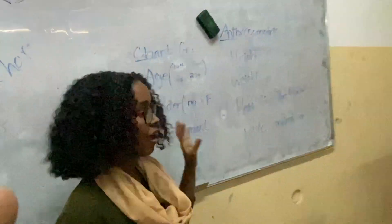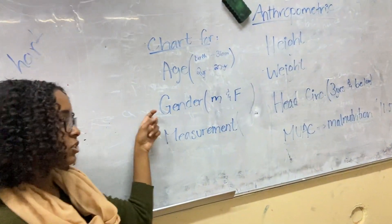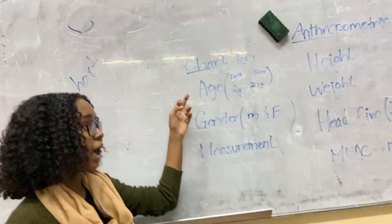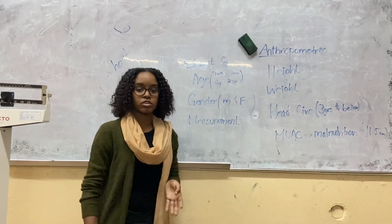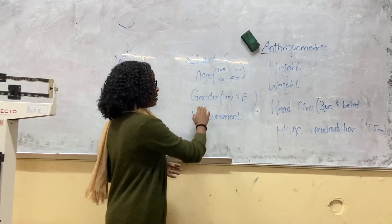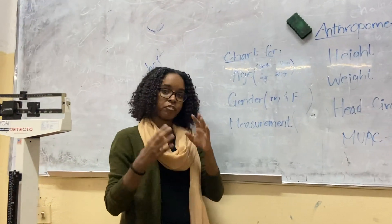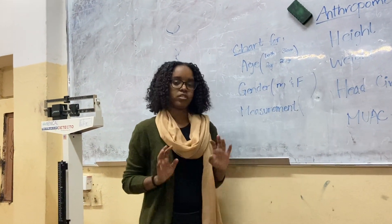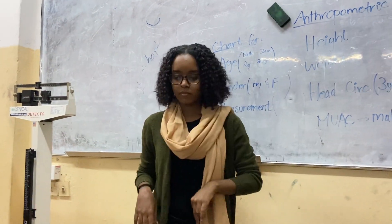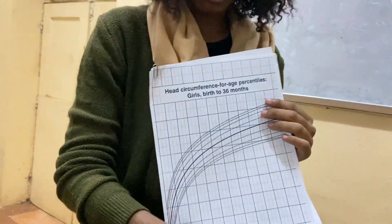So let's talk about plotting the chart. Plotting the chart requires three things: the correct age, the correct gender, and the correct measurement. There are charts for birth to six months, or from two years to 20 years, so make sure you're using the correct chart for the age range. One chart for male, one for female. And make sure if you're plotting the height, you're plotting it on a height chart; if you're plotting the weight, you're plotting it on a weight chart.